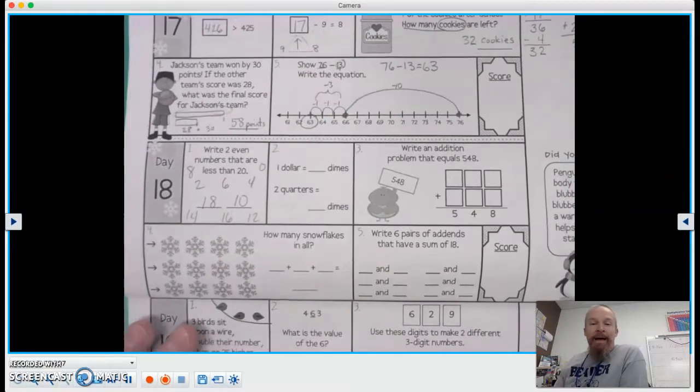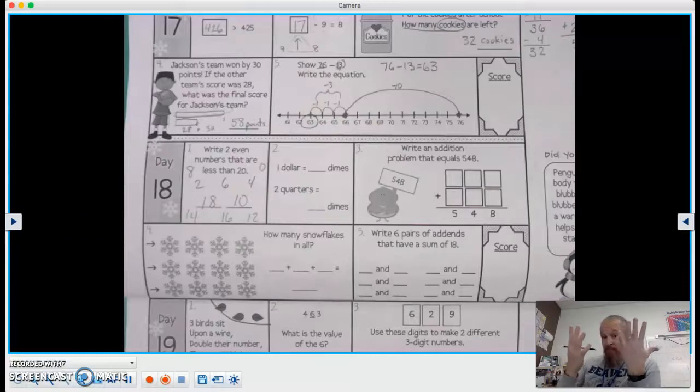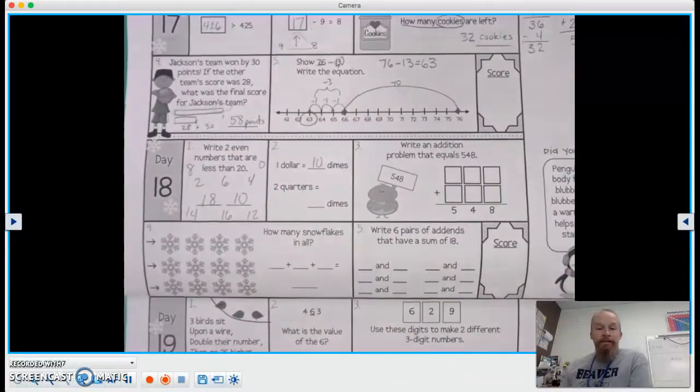Number two. One dollar equals how many dimes? Well, each one is worth 10 cents. Ten dimes is one dollar. Ten tens is a dollar. So ten dimes is equal to one dollar.